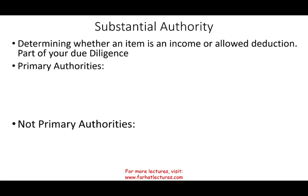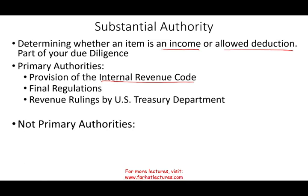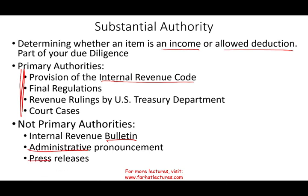Let's look at certain terms you need to be familiar with. First is substantial authority — what are we relying on to determine whether something is income to be included, or a deduction we can take? This is part of your due diligence. Primary authorities include provisions of the Internal Revenue Code, any final regulation by the IRS, revenue rulings by the U.S. Treasury Department, and court cases. What's not considered primary authority: the Internal Revenue Bulletin, administrative pronouncements, and press releases.